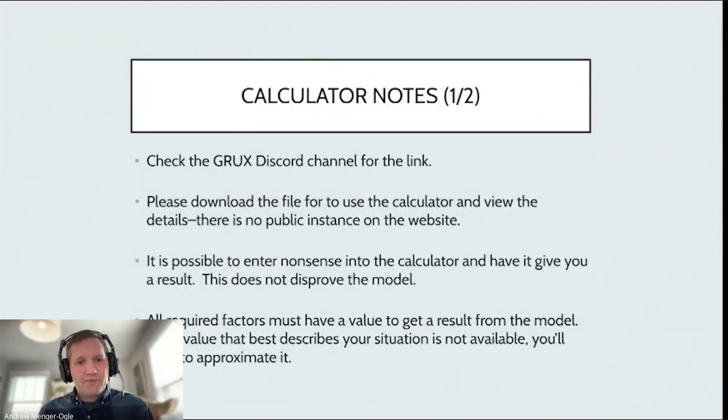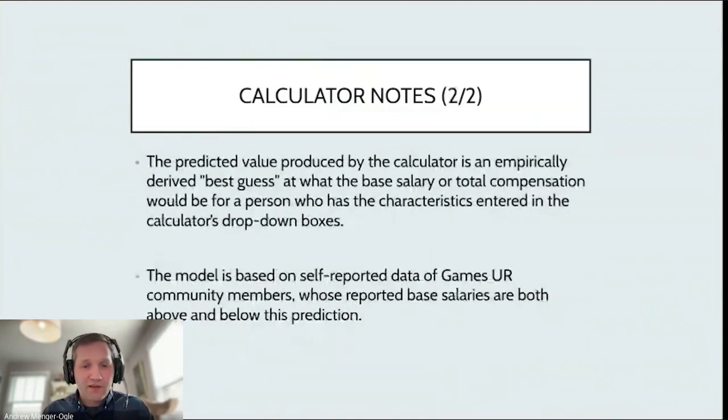And then the calculator. This is available again—go to the GRUX Discord channel for the link. We're not going to have a public instance up of the spreadsheet on the website, so just download that for yourself. As a reminder, it's possible to put in something silly into this thing, so you could be a junior with 30 years of experience. The calculator will give you a number, but that number isn't a good number, so just don't abuse it. And then you have to put in a value for each of the predictors from the drop-down menu. So just try to get it as close as you can—make it describe you as best you can.